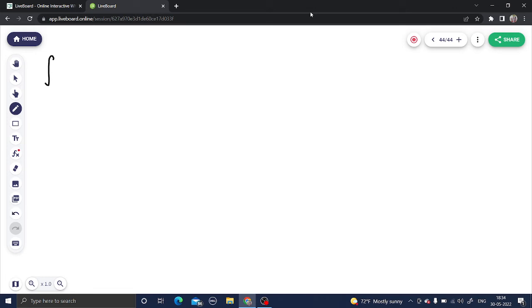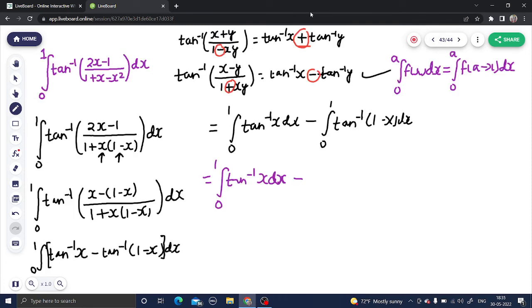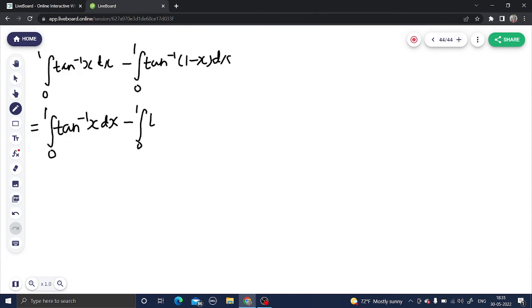We have first integral as 0 to 1 tan inverse x dx. Leave first as it is, 0 to 1 tan inverse x dx. I think there was a minus sign in between, minus 0 to 1. Now if I use this property, I can write this integral as tan inverse. I have to replace x by a minus x, so I have to replace x by 1 minus x dx.